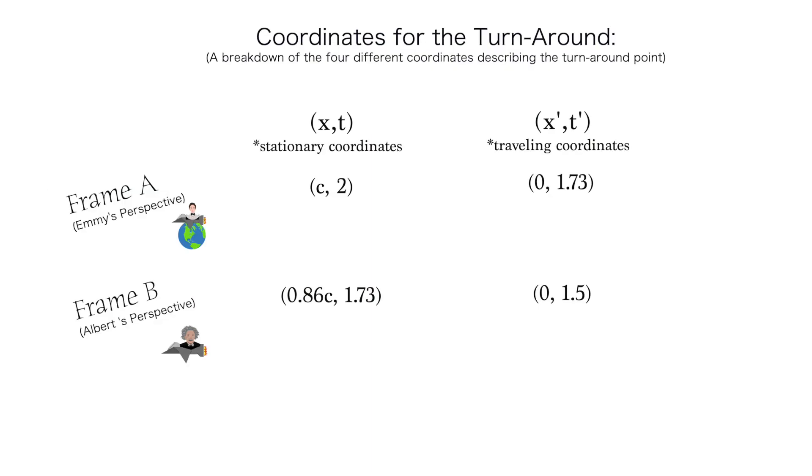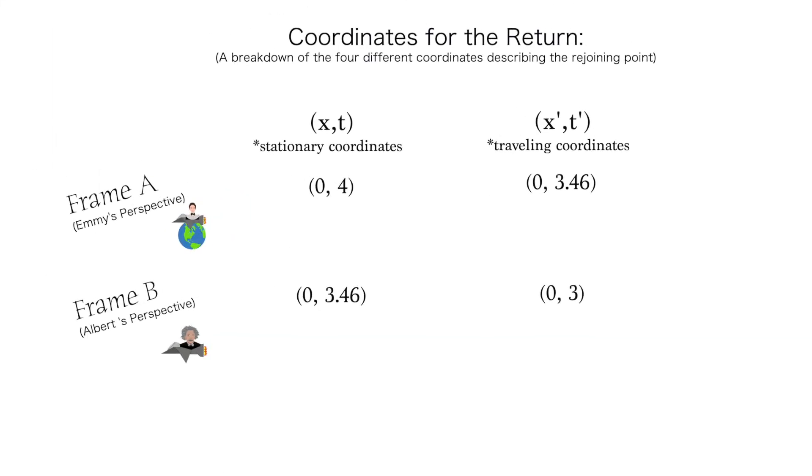Thus, to summarize, when Albert reaches the turnaround point, Emmy will calculate that only about 1.73 years has elapsed for him, and two years for her. But in Albert's frame, when Emmy reaches the turnaround point, he will calculate that, while 1.73 years has indeed elapsed for him, only 1.5 years has elapsed for her. Thus, both twins at this point can claim the other is younger. On the return journey, both twins can essentially repeat these calculations and get the same durations of elapsed time as they calculated for the outward journey.